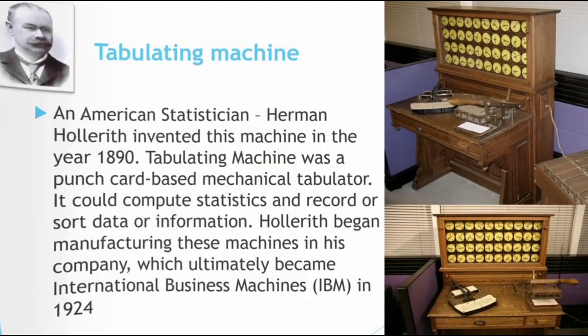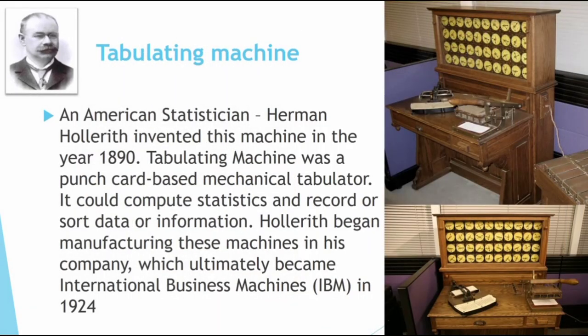Next is the Tabulating Machine. American statistician Herman Hollerith invented this machine in the year 1890. It was a punch card-based mechanical tabulator that could compute statistics and record or sort data. Hollerith began manufacturing these machines in his company, which ultimately became the first International Business Machine — known as IBM — in 1924.